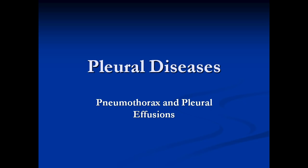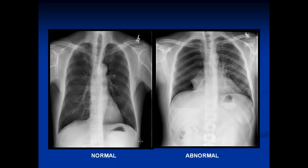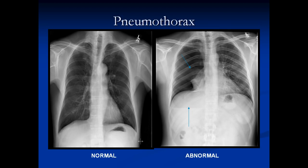Now we're going to talk about pleural disease — pneumothorax and pleural effusions. This is the same patient: a normal chest on this patient, and this is after a pneumothorax. There are two features you should see. The first is that the whole lung on the abnormal side is collapsed — this is all air, and the white stuff in the middle is the lung. We've got an air fluid level at the base. Any time you get a pneumothorax with a little fluid, you're going to get an air fluid level — it implies there's air and fluid; nothing else can cause a level. The left lung is unremarkable, and there's no mediastinal shift, so this is just a straightforward pneumothorax.